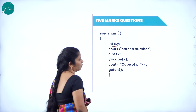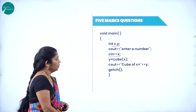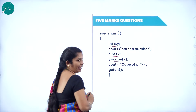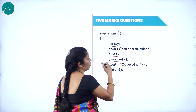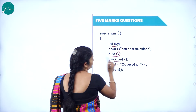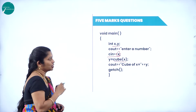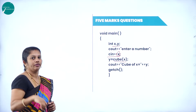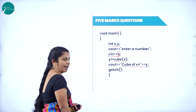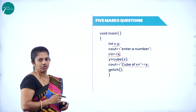In the main program, we declare variables x and y. We prompt 'enter a number', then input the x value. Then y = cube(x) — here we are calling the function. Whatever x value we give, it calculates the cube. If x is 2, then 2*2*2 is calculated. Then we display 'cube of x equals y'. Then getch. This is a simple program using inline function.